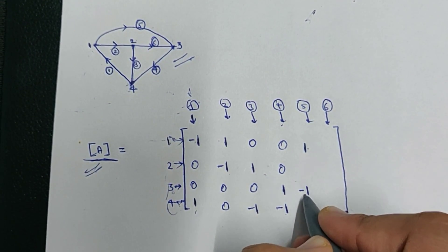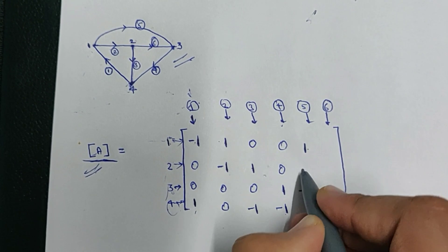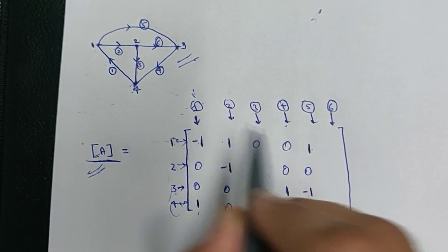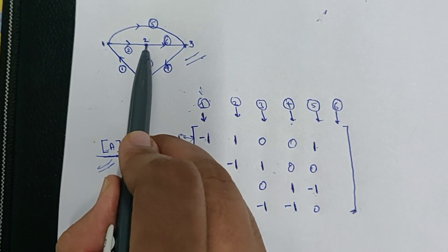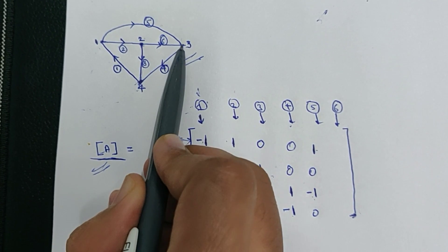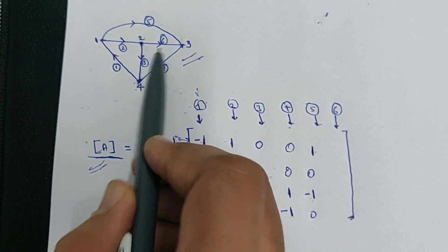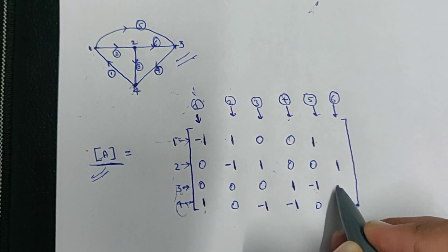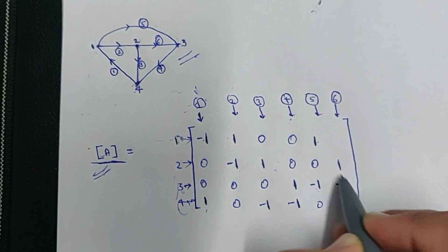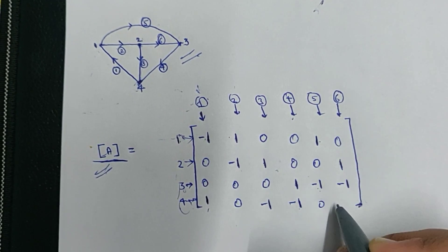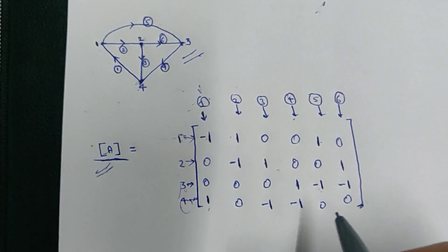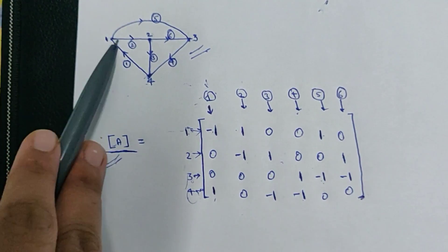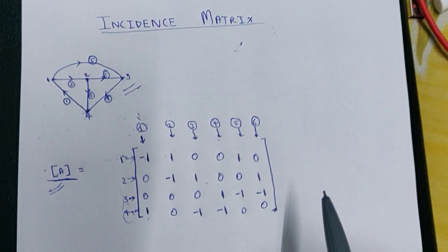Similarly, for branch six, the current is flowing from node 2 to node 3. From node 2 to node 3, and all other entries are zero. So this is the complete incidence matrix of this directed graph.